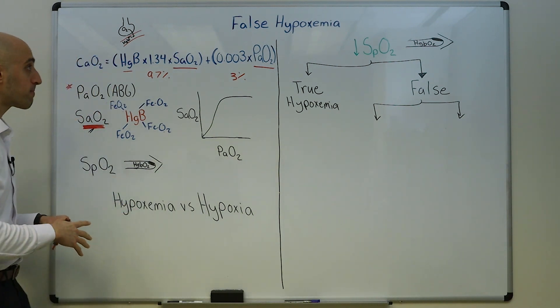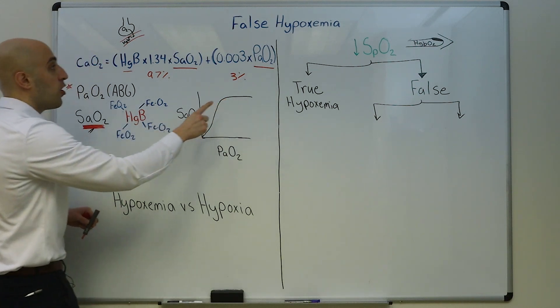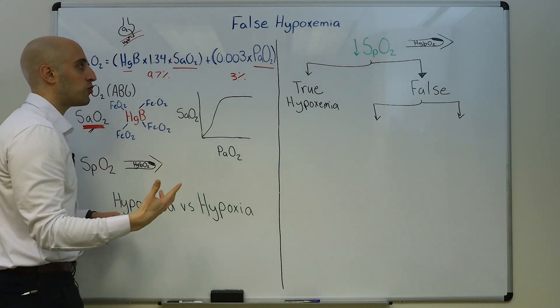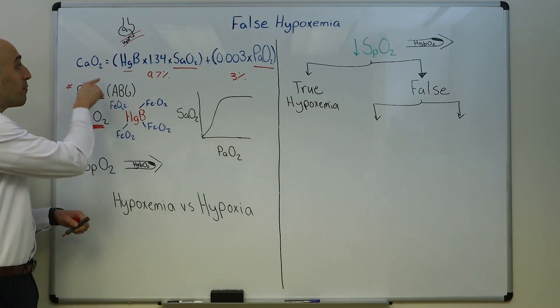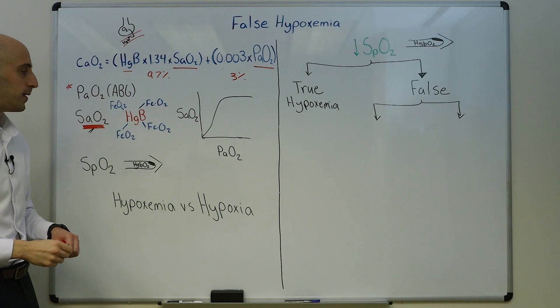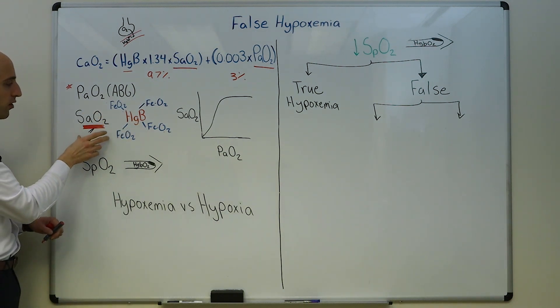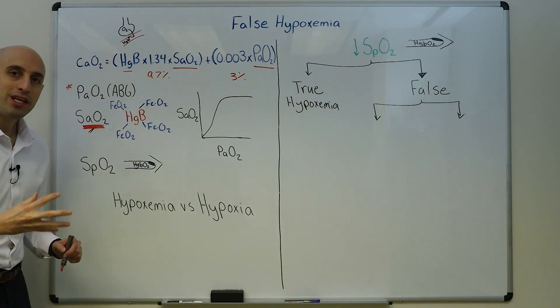What the partial pressure of oxygen is not affected by is the number of hemoglobin or the shape of hemoglobin. This has no effect on the partial pressure of oxygen. This is why a patient with anemia or a low hemoglobin number will have a normal partial pressure of oxygen, will have a normal oxygen saturation, but may have cellular hypoxia.